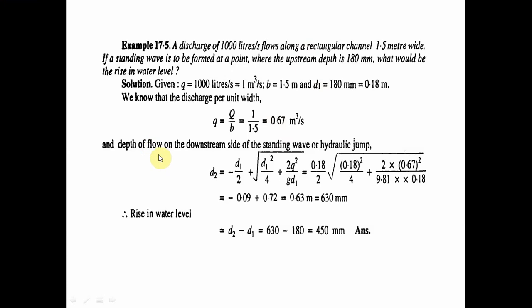The depth on the downstream side of the hydraulic jump is d2 = -d1/2 + √(d1²/4 + 2q²/g·d1) = -0.09 + √(0.18²/4 + 2×0.67²/(9.81×0.18)) = -0.09 + 0.72 = 0.63 meters = 630 mm. Therefore, the rise in water level = d2 - d1 = 630 - 180 = 450 mm. That is the answer.